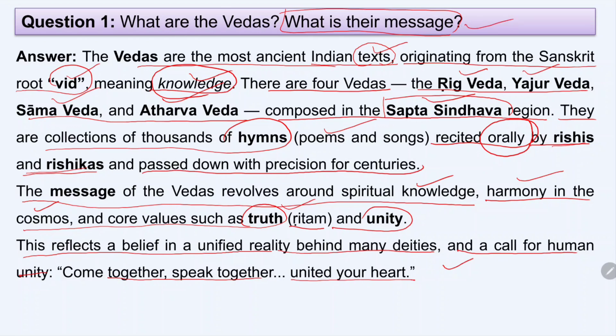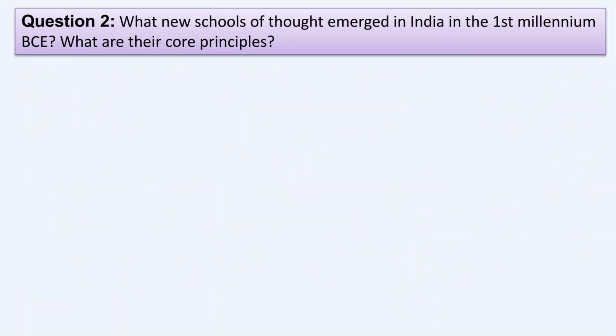These answers have been written in short, taken from your text only, so you can write them down in your exam if you are asked these questions. I hope this first question is clear. If you have any doubt, mention it in the comment section and I will try to resolve it. Now let us move to the next question: what new school of thought emerged in India in the first millennium BCE, and what are their core principles?